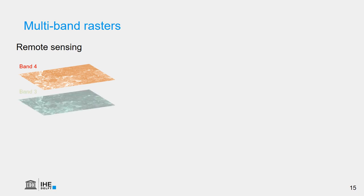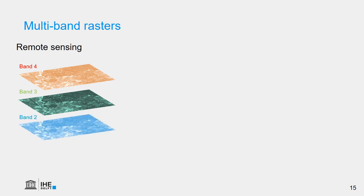Here we see band 4, band 3, and band 2 of a certain sensor. Our eyes are limited — we can only see red, green, and blue. So we have to assign a certain color gradient in red, green, and blue to the reflection data from remote sensing.